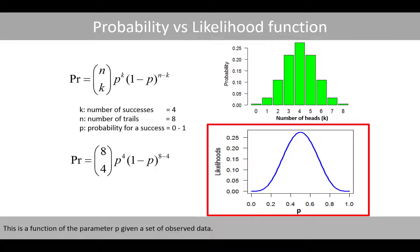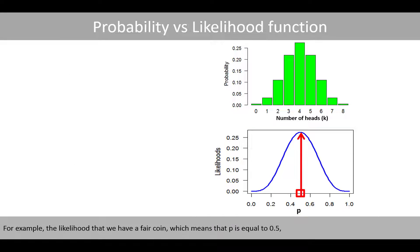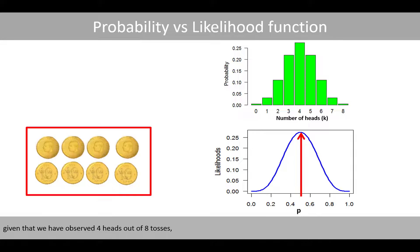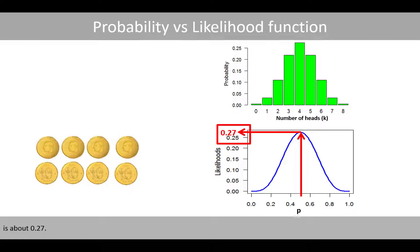This is a function of the parameter p given a set of observed data. For example, the likelihood that we have a fair coin — meaning that p is equal to 0.5 — given that we have observed four heads out of eight tosses, is about 0.27.